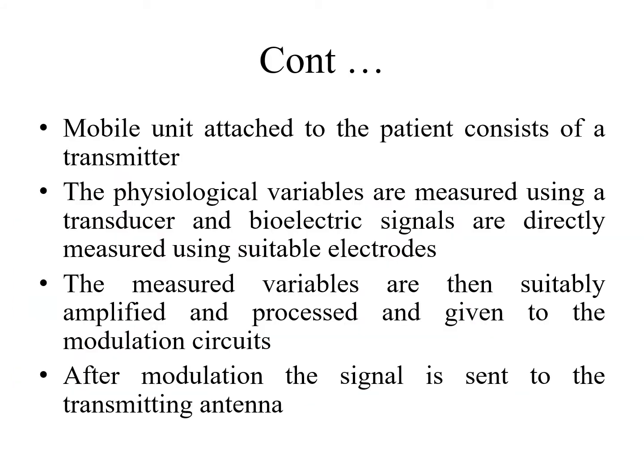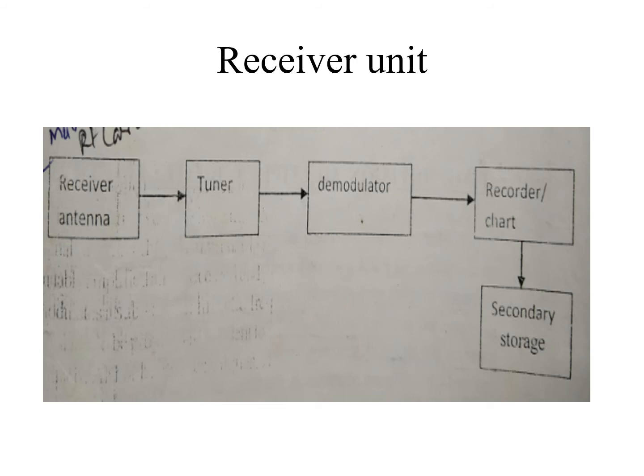The mobile unit attached to the patient consists of a transmitter. The physiological variables are measured using a transducer, and bioelectric signals are directly measured using suitable electrodes. The measured variables are then suitably amplified and processed, and given to the modulation circuits. After modulation, the signal is sent to the transmitting antenna.